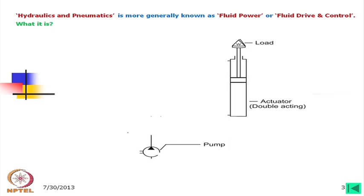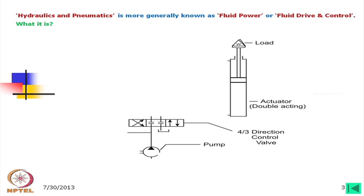We need some means to take the oil out. What we can introduce is a valve named as a 4 by 3 directional control valve. I shall describe later what is meant by a 4 by 3 directional control valve, but looking into this we find that the pump is connected to one port and there are two ports — a top and a bottom port — which is apparently draining the oil.